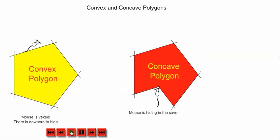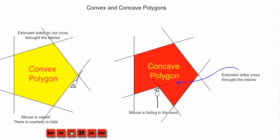Let me show you what that looks like. So we extend the lines, and look what happens. Here, none of the extended lines cross through the inside of the polygon. But in the concave polygon, two of the extended lines crossed in.